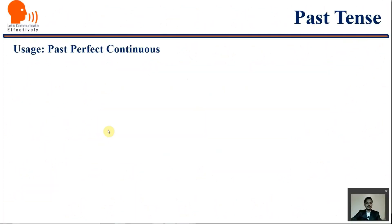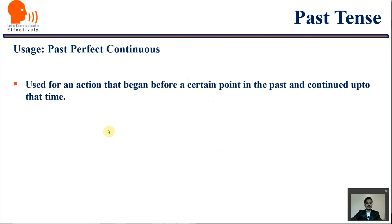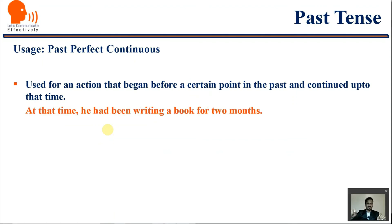Past perfect continuous is used for an action that began before a certain point in the past and continued up to that particular time in the past itself. For example: 'At that time, he had been writing a book for two months.' I met him in February, and at that time he had been writing a book for two months. The writing began before that point, and when I met him, he was still writing — so 'he had been writing the book.'